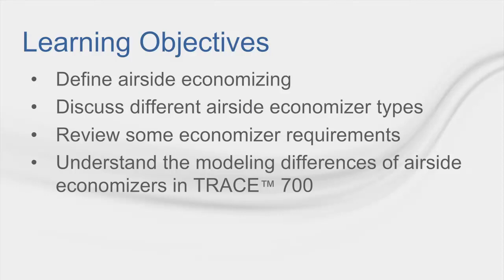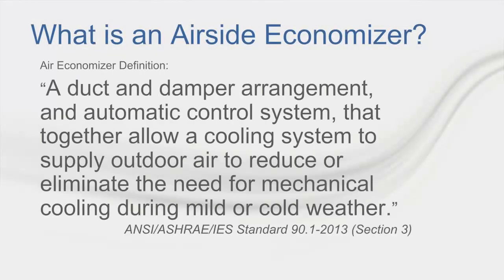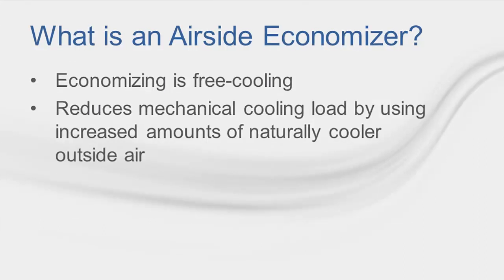Let's begin by discussing what an airside economizer is. According to ASHRAE Standard 90.1-2013, an air economizer is defined as a duct and damper arrangement and automatic control system that together allow a cooling system to supply outdoor air to reduce or eliminate the need for mechanical cooling during mild or cold weather. Essentially, airside economizers are a form of free cooling. By increasing the amount of outdoor air or ventilation air beyond mandated minimums, the load on a cooling plant can be decreased, saving energy and money in the process.